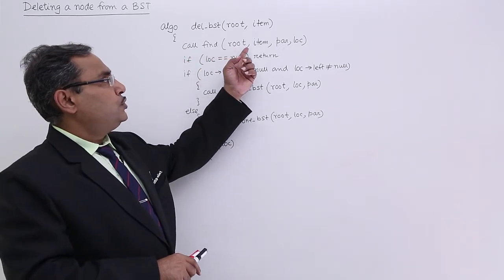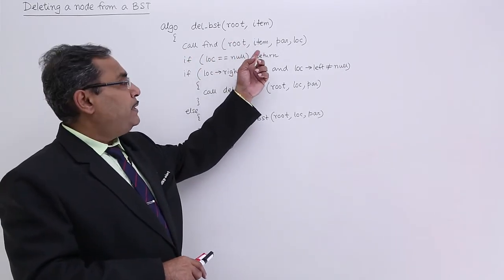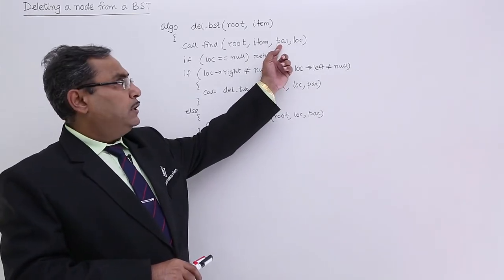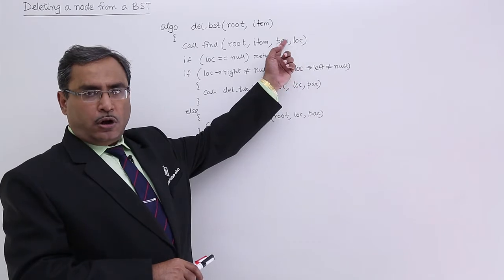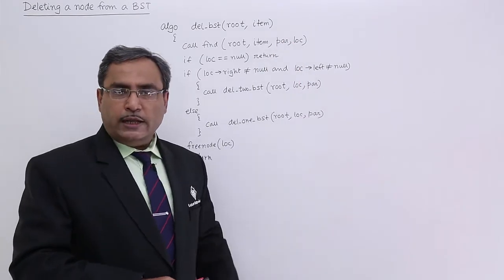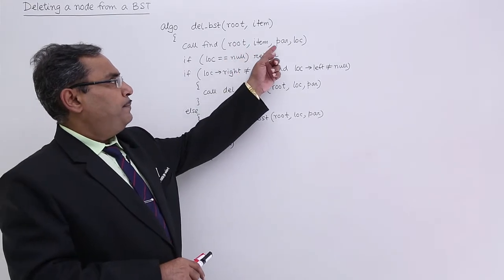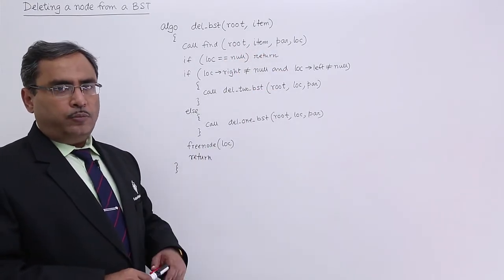Called find root item I am passing these 2 parameters and it will return me the parent nodes address of the lock parent of the lock if the lock info is containing the item. That is why I am passing root item par and lock. The par and lock will be the output arguments.